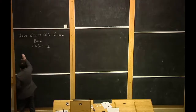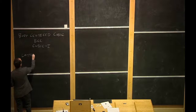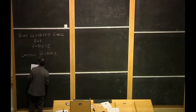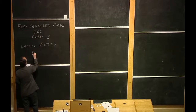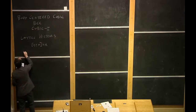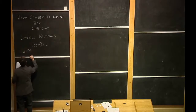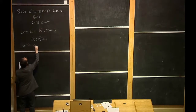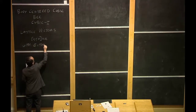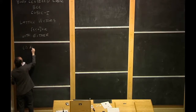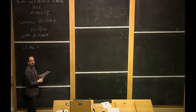To convincingly show that the BCC is actually a lattice, we should write down the lattice vectors. We'll write them as (u, v, w) times the lattice constant a, with the following possibilities.